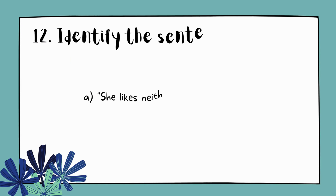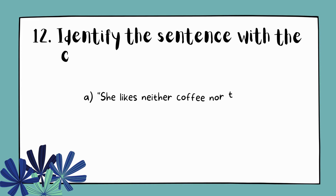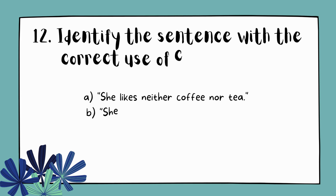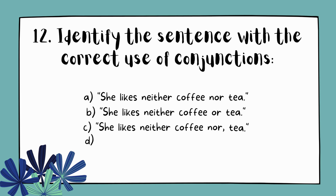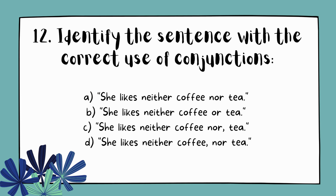Question 12. Identify the sentence with the correct use of conjunctions. A. She likes neither coffee nor tea. B. She likes neither coffee or tea. C. She likes neither coffee nor tea. D. She likes neither coffee nor tea.